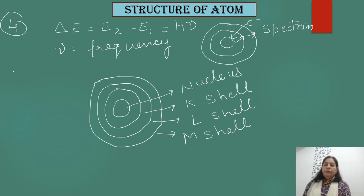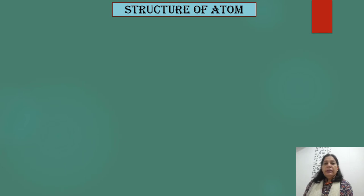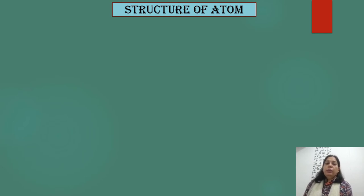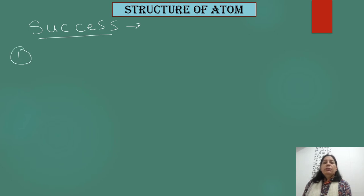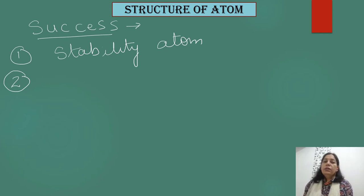After Rutherford, Niels Bohr gave postulates that allowed him to explain the structure of the atom, especially for hydrogen. Bohr's experiments were applicable only for hydrogen atoms, and these postulates could also explain the hydrogen spectrum — the atomic spectrum formed by a hydrogen atom. Now, let us discuss some of the successes of Bohr's model. The first success is that this model could explain the stability of the atom.